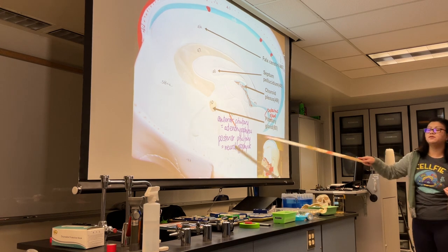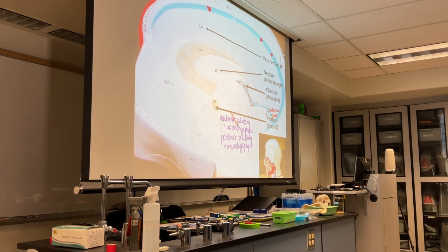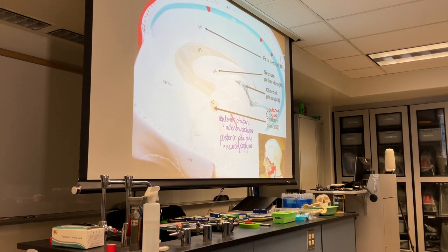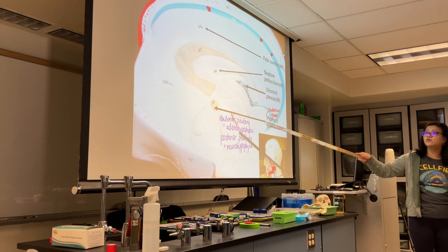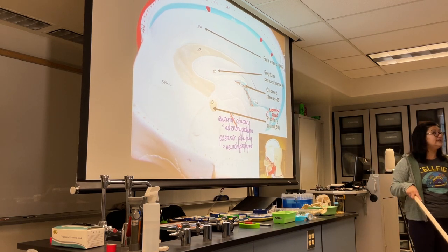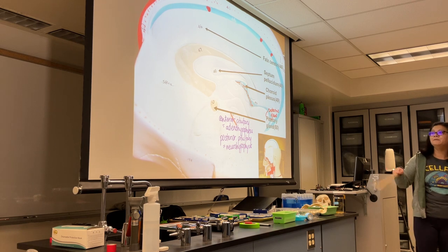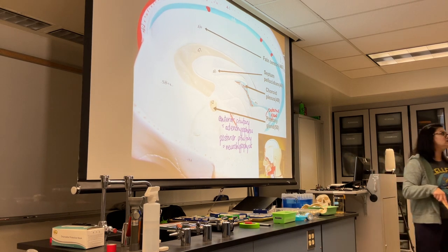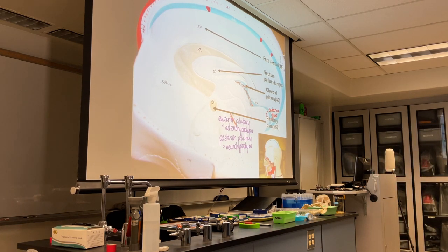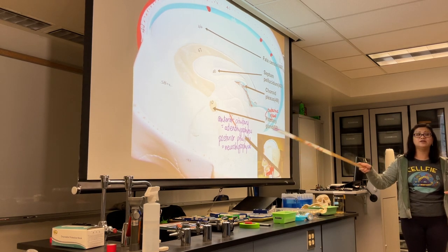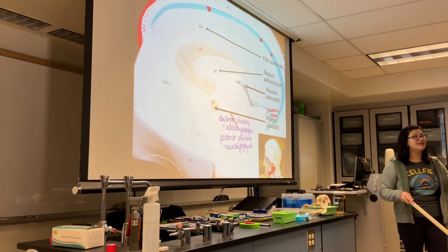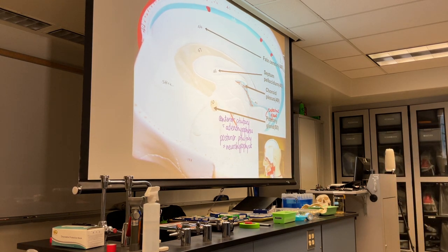The posterior pituitary is not made up of endocrine tissue; rather, it is made up of nervous tissue. That's a big difference between the two parts. The anterior portion is completely endocrine — it makes products. The posterior portion is nervous tissue, but it still releases hormones; however, those hormones are actually made in the hypothalamus.